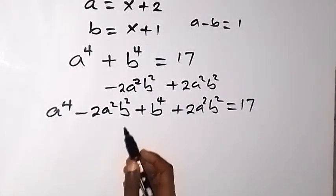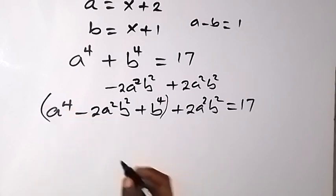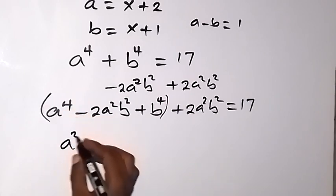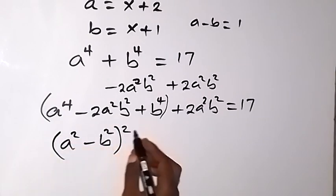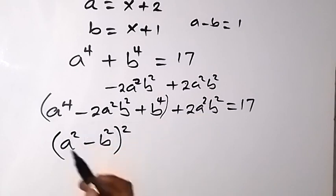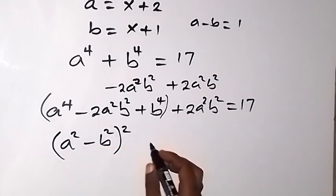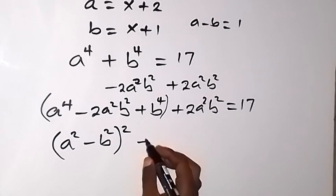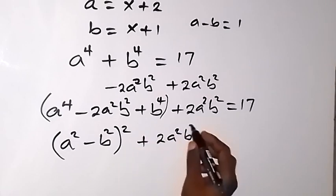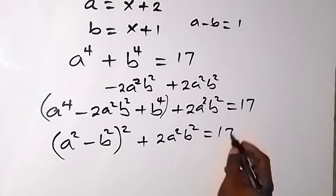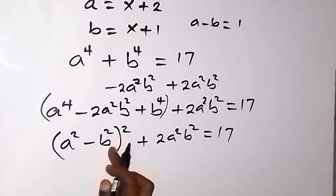Grouping the first three terms, we can write it as (a² - b²)² + 2a²b² = 17. The expression inside the bracket fits the difference of two squares form.